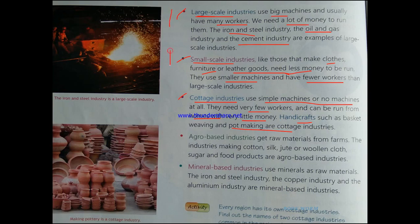So these three types — large-scale, small-scale and cottage industries — are divided under the category of size. If you are asked what are the types of industries based on size, you will say large-scale, small-scale and cottage industries. Next, coming on to the types of industries based on the use of raw materials.